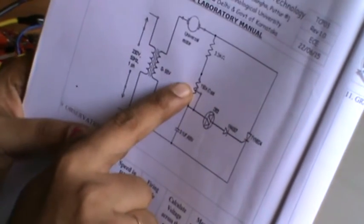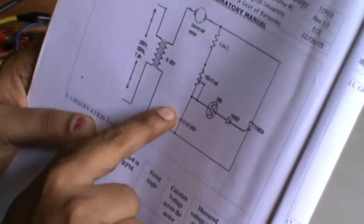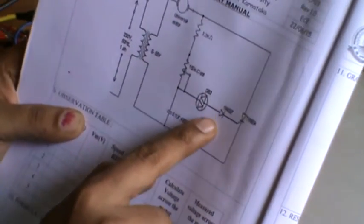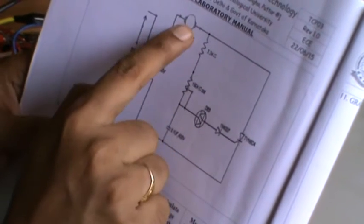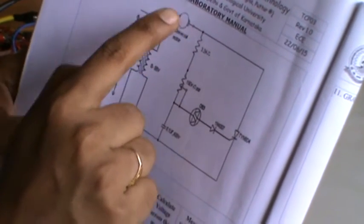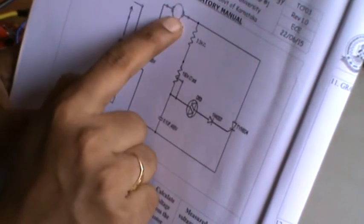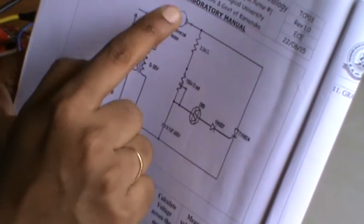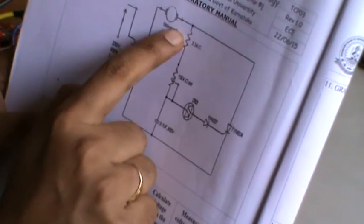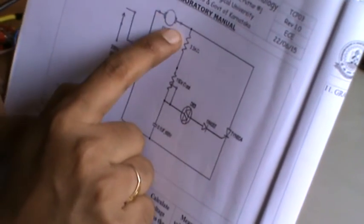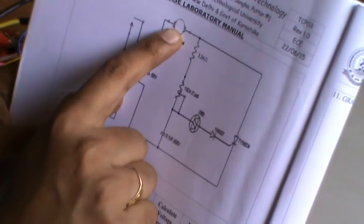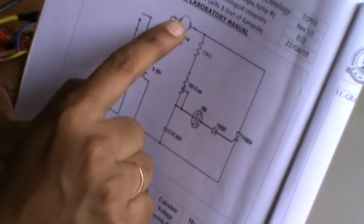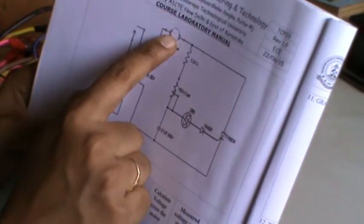If the R value is less, the capacitor will get charged quickly, the firing angle will be small, and the conduction time will be more. The average RMS value across the motor will be more, and the speed will be more. By varying the conduction angle, we will be varying the RMS value given to this motor and thereby the speed of the motor.